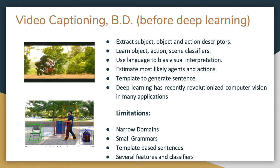Video captioning, like many other applications before deep learning, was done using something called SVoP — that is, subject, object, and verb classifiers. Templates were used; the models used to learn the object, action, and scene classifiers and then generate a sentence. These sentences weren't accurate enough. Since the introduction of deep learning, this has been revolutionized and changed a lot.